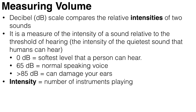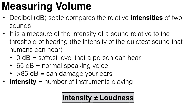But our ears do not hear intensity. Rather, they hear changes in air pressure, and this is not the same as intensity. And so, decibels measure intensity rather than air pressure changes, making it an indirect method of measuring volume. You need to multiply intensity by 10 in order to double the volume.